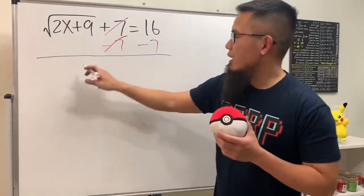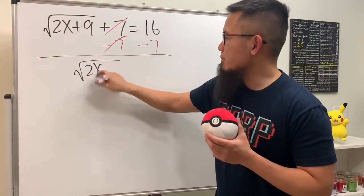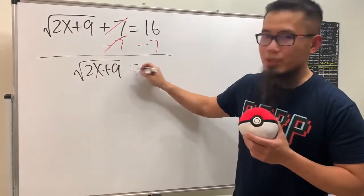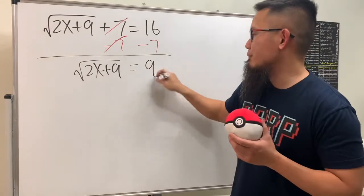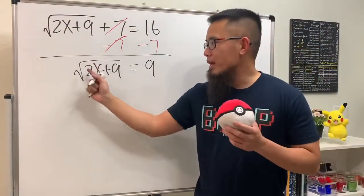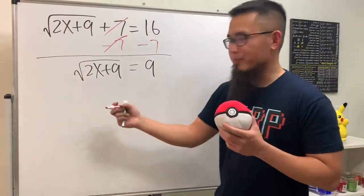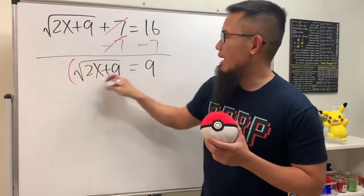We see this is going to be square root of 2x plus 9, and that's equal to 16 minus 7, which is 9. Now we have the square root right here, so to solve this we will have to raise both sides to the second power.